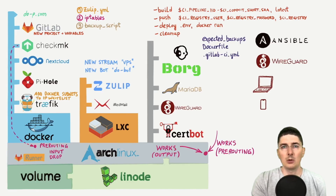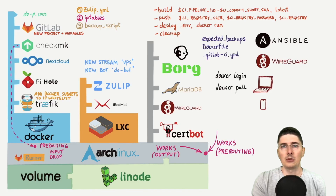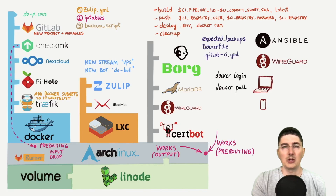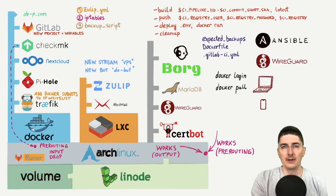I then showed how you can download images from the private registry on another machine. You first authenticate, then run docker pull with the tag you want to download, and then you can run the container locally. But make sure that wherever you are running the container, your application can reach the necessary services — in this case MariaDB and Zulip.